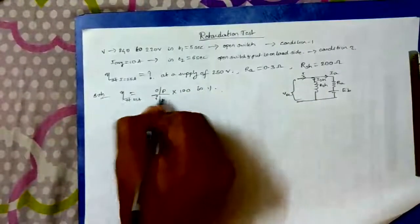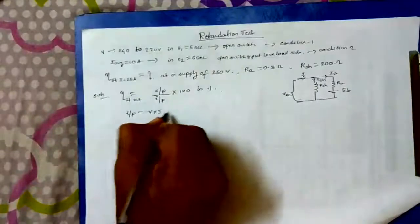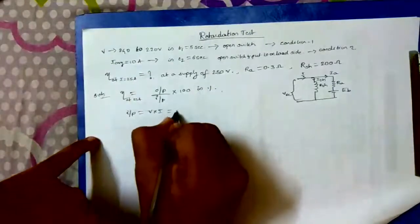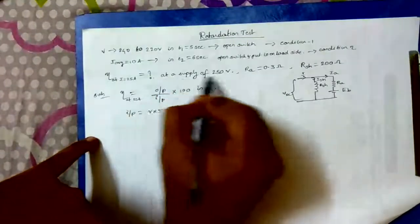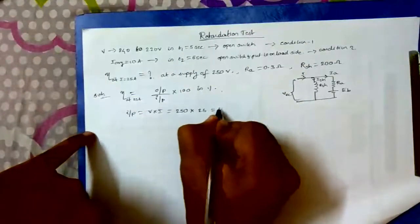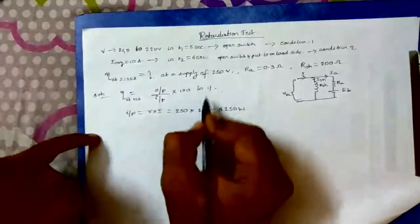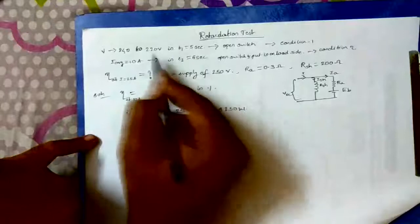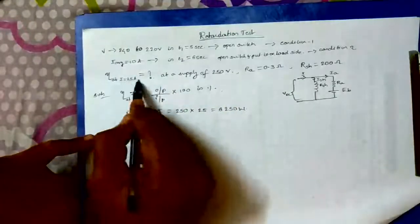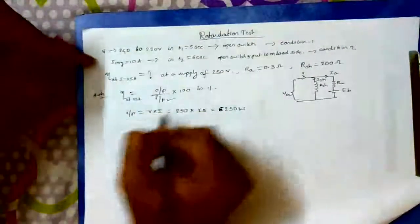First let us check whether we know input or not. Input is nothing but V into I. Input to the motor is V into I. What is input here? He has clearly asked efficiency at this, so voltage I will take 250 volt and current is 25 ampere. I am going to multiply this and get 6250 Watt. Input is 6250. Do not get confused whether I should be taken as 10 ampere or something else. He has clearly mentioned efficiency at 25 ampere, not average current. Directly you have to take this 25 ampere.